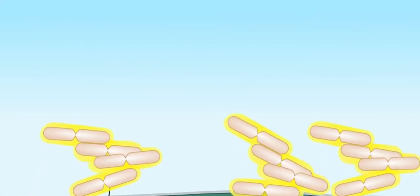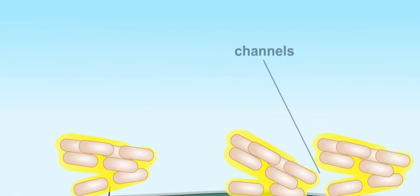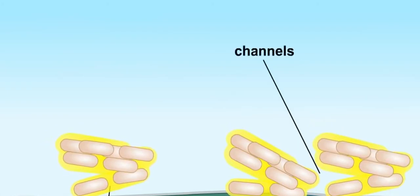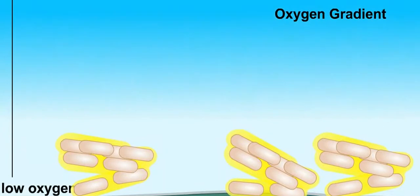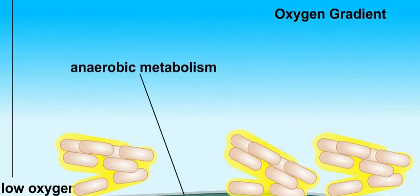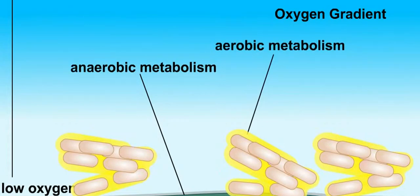Growth within the biofilm is not uniform. Channels develop which permit incorporation of fresh nutrients and oxygen. Metabolic activities of microorganisms in a biofilm can create changes in the microenvironment. For example, an oxygen gradient can develop that permits anaerobic metabolism near the interior and aerobic metabolism on the exterior. Nutrient and pH gradients are also produced.